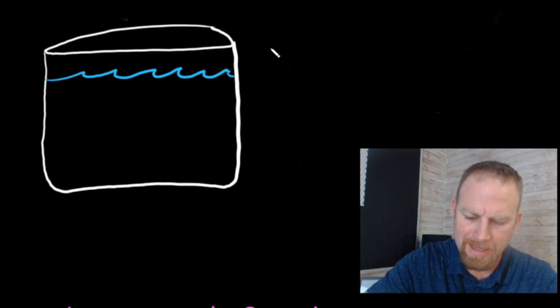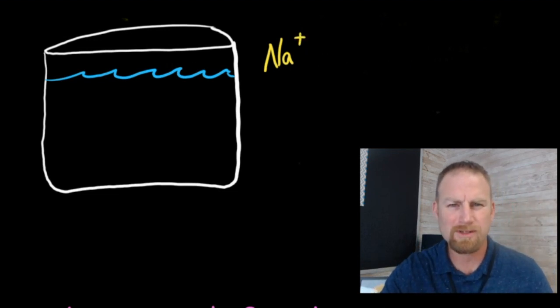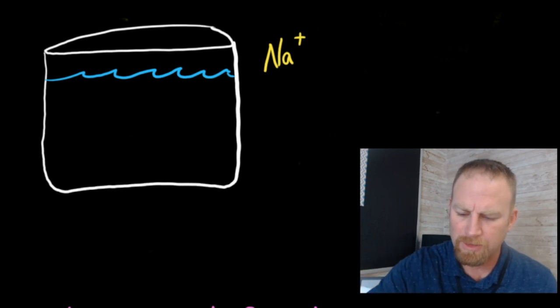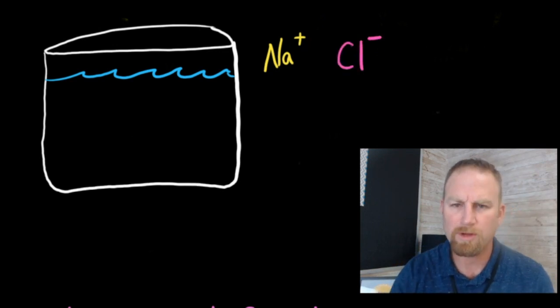So table salt is NaCl. And Na, each sodium is one plus. The one is usually omitted and you usually just have the plus symbol. So you have Na+, and I'm going to use a different color for the Cl, and you have chlorine, which is Cl- or one minus.